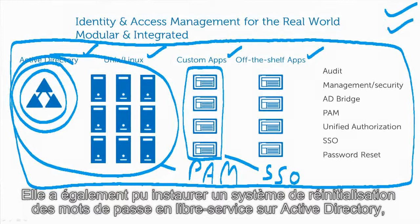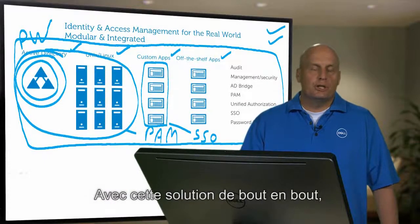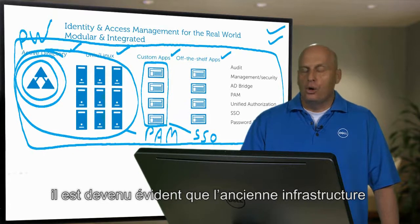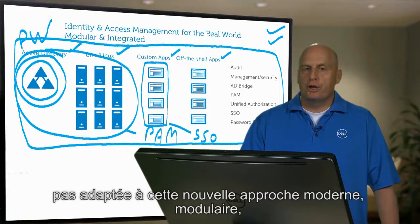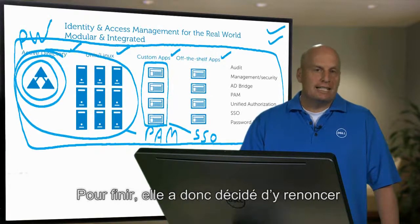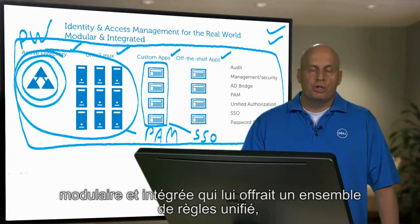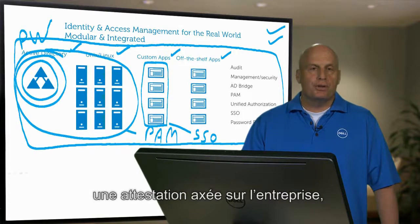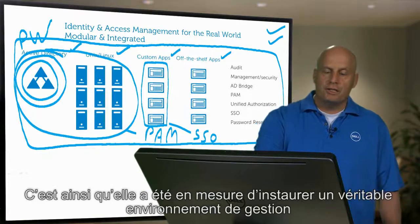It also gave them the opportunity to do a self-service password reset on Active Directory, which applies everywhere else as well. With this full end-to-end solution in place, it became apparent that the old framework simply wasn't designed for this new modular and integrated, modern and business-centric approach to identity and access management they were achieving. So the last thing they did was replace it with another piece of the modular and integrated approach, which gave them a unified policy set, business-driven attestation, and the other things necessary to do full access governance around the whole environment.